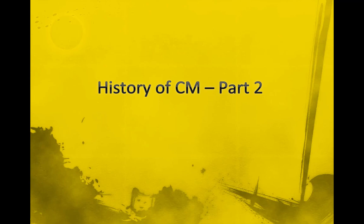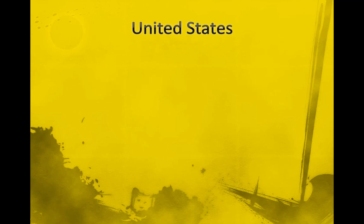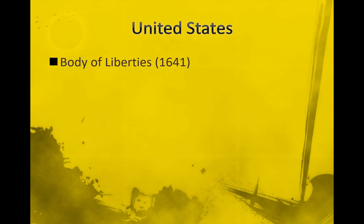If we look at the United States in the 1600s, the Puritans had a law called the Body of Liberties. The Puritans were in this country at that time, and they had a law that prohibited parents from any - using their own words - from any unnatural severity against children. In terms of what was an unnatural severity, that would have been defined by their cultural values and beliefs. But what they are clearly saying is that parents can go too far.